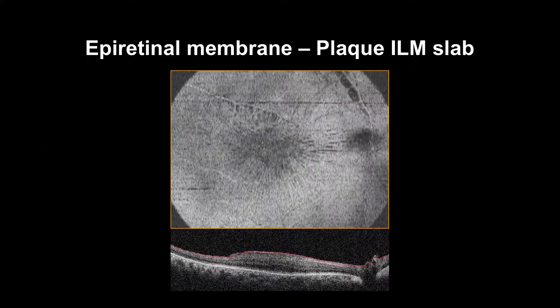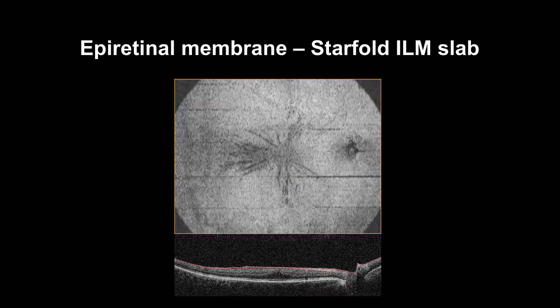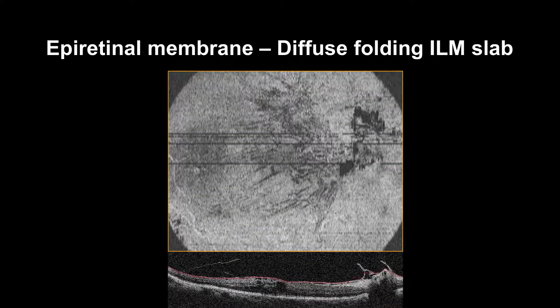The epiretinal membrane has unique patterns on EnFace. The plaque will appear as a plate on the ILM slab, radiating straight or end-curved hyporeflective folds. Please note how the fovea is absent. Star folds can be one or multiple, central and non-central, which look like multiple hyperreflective foldings. Please note the blink artifact and how the fovea is absent. Diffuse folding can appear as hyperreflective folding in the macular area.